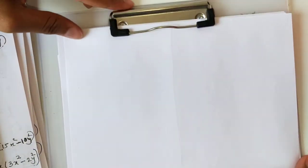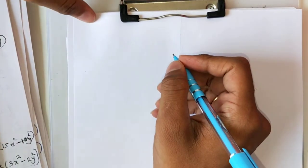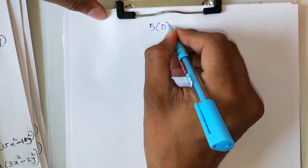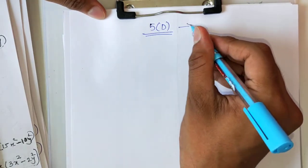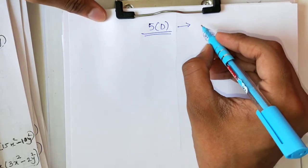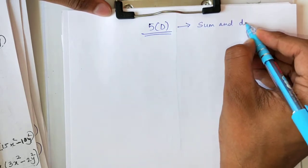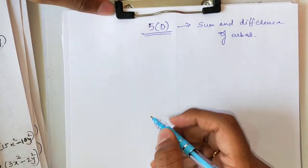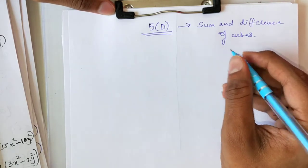Today we will start with Exercise 5D. A few sums were left of Exercise 5C but I told you that we will do them later. Let's start with 5D today. In the 5D exercise we are going to study the formulas of sum and difference of cubes. Up till now we were doing sum and difference of squares. Now we will do cubes.